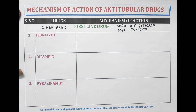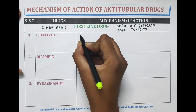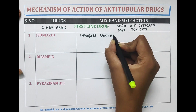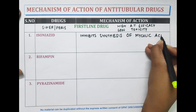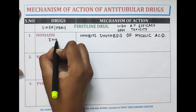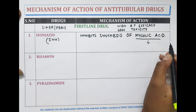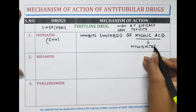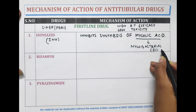The first drug is isoniazid. The mechanism of isoniazid is inhibiting the synthesis of mycolic acid. Isoniazid is also written as INH. It inhibits the synthesis of mycolic acid, which is an important component of the mycobacterial cell wall.